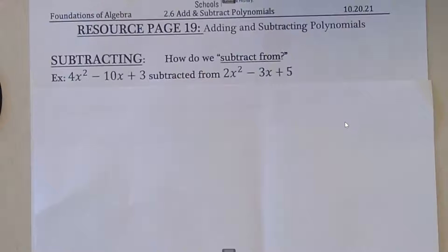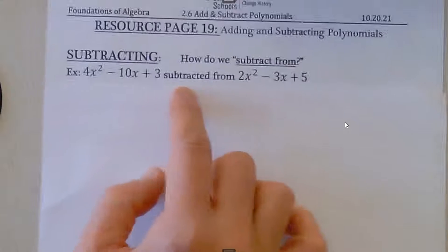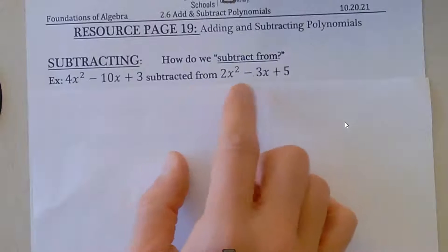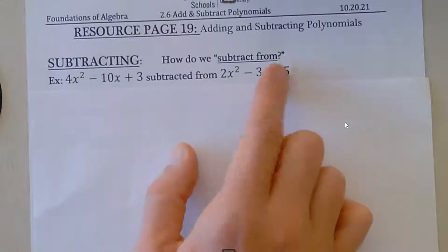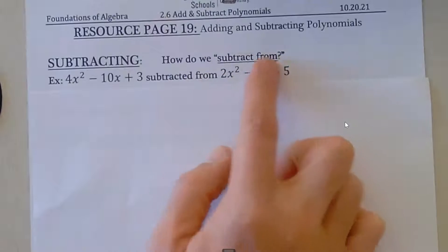So now we have our first example: 4x² - 10x + 3 is subtracted from 2x² - 3x + 5. So this is what we're starting with, so this is what needs to come first in our subtraction.